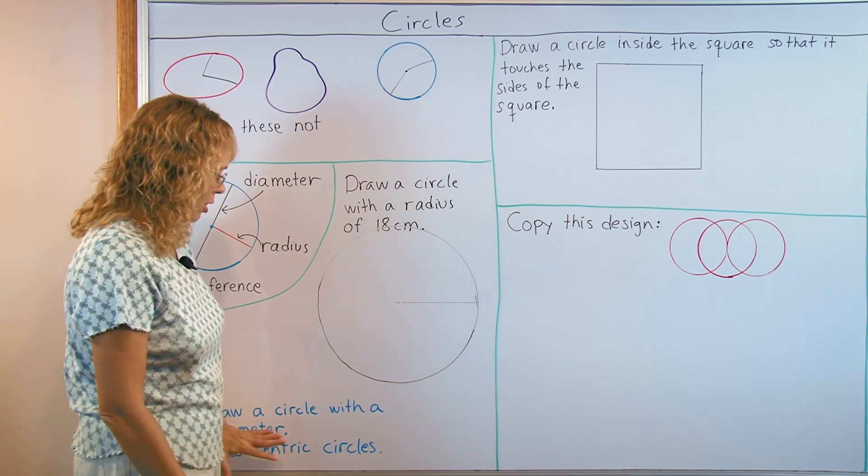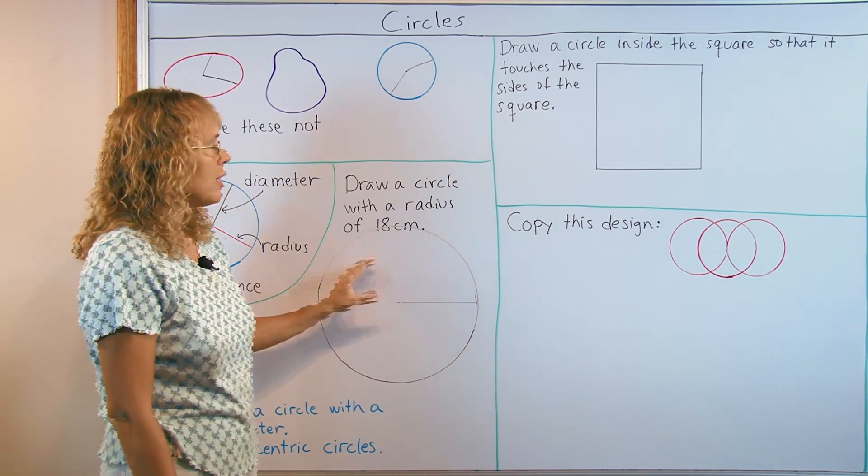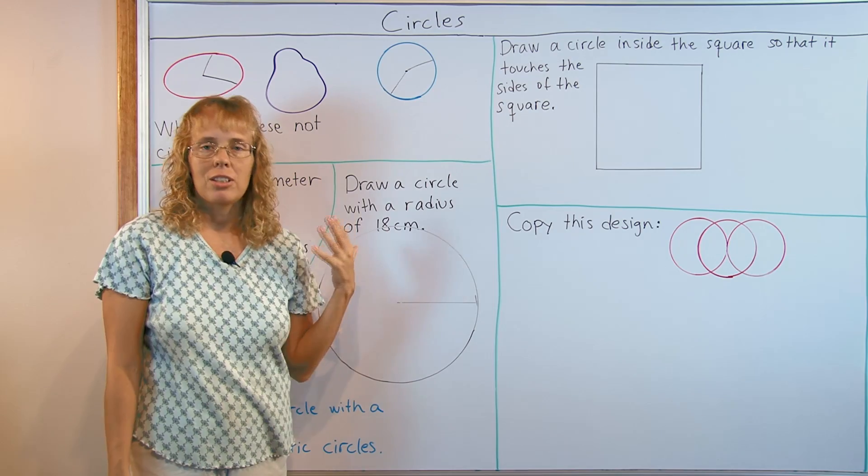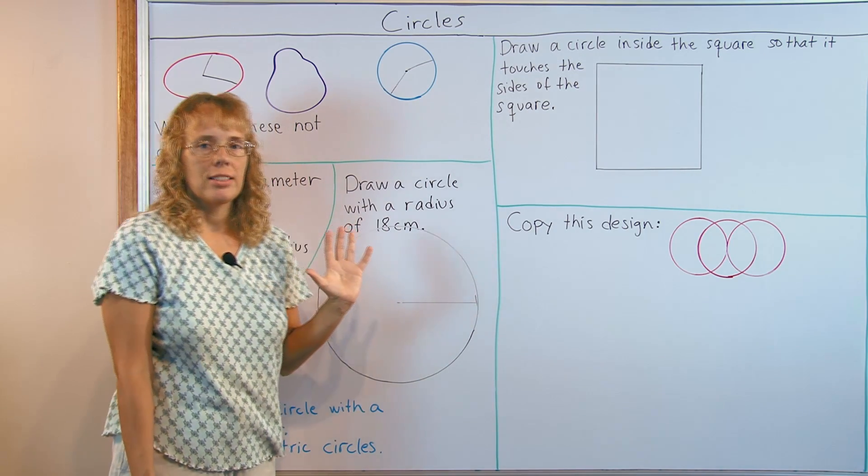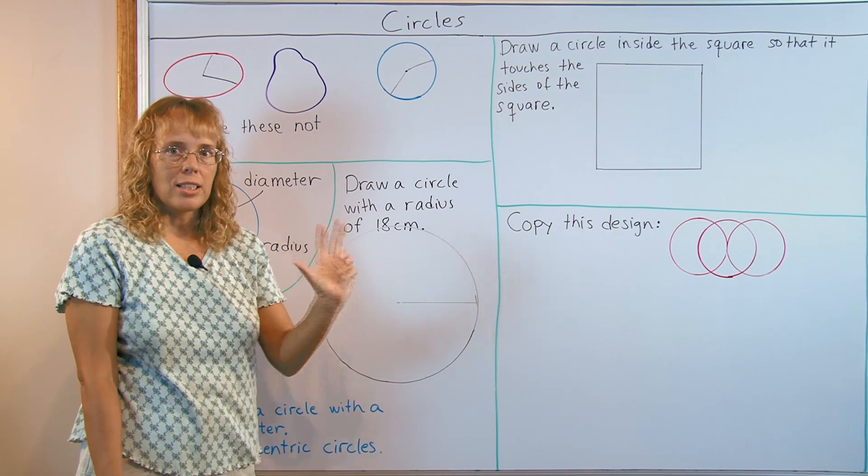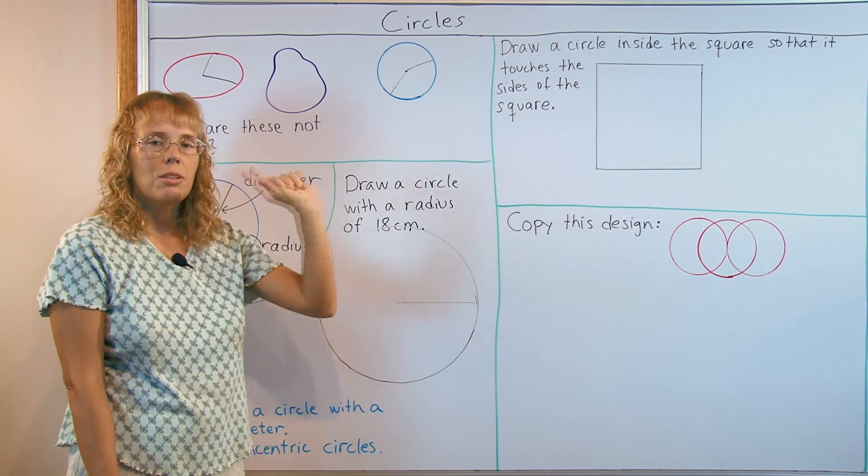They can also draw a circle with a given diameter. If I say that draw a circle with a diameter of 20 centimeters, then they need to take half of that, the 10 centimeters, as the radius and set their compass to 10 centimeters and draw a circle.